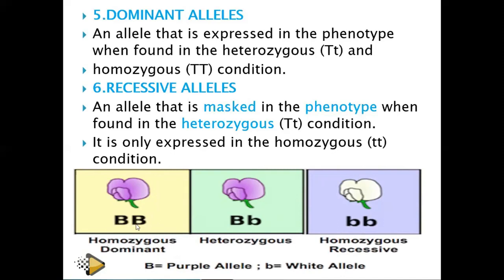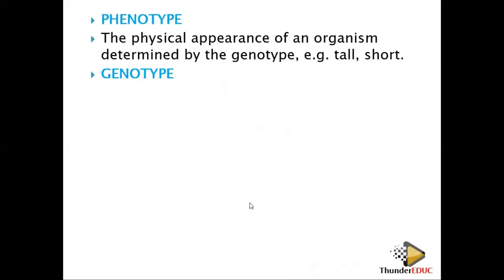Homozygous dominant means the zygote has the same kind of allele — two identical dominant alleles. Homo means same, and zygous comes from zygote. Heterozygous means the zygote has different kinds of alleles — one capital letter and one small letter. Homozygous recessive means the same type of alleles, but both are recessive.